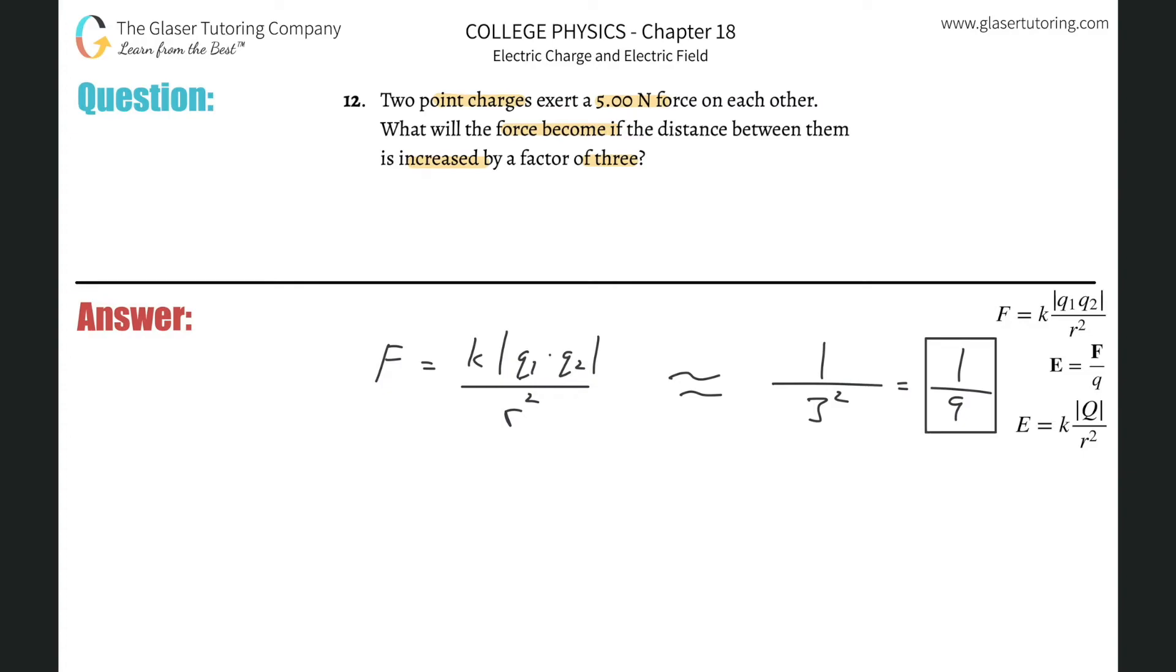So what this tells us is that when the distance between them is increased by a factor of three, the force value now will be reduced to one ninth of its original value. In other words, the force now is going to be equal to one ninth of the original.